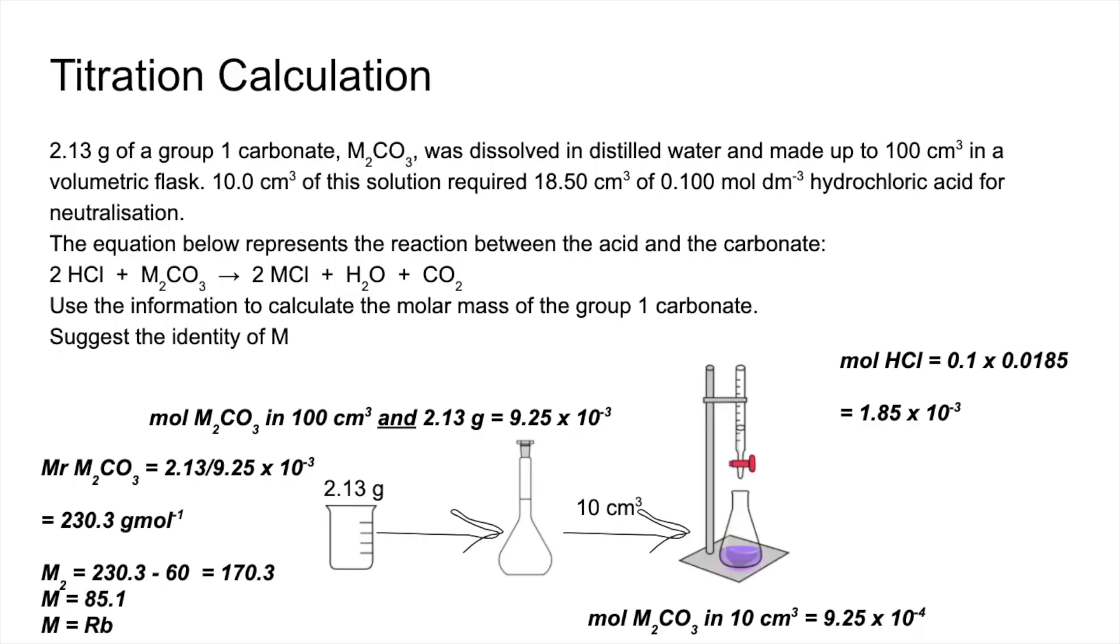So M was rubidium, because we were told at the very top of the question it's a group one carbonate.